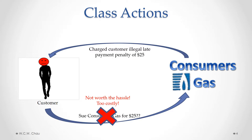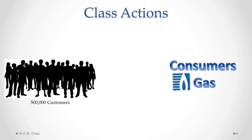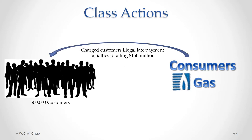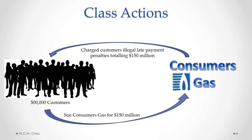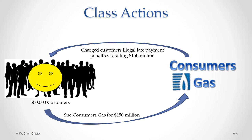With the ability to start a class action, instead of focusing on just one customer, we can look at all of the affected customers. In this case, there were 500,000 affected customers who, as a group, were charged illegal late penalties totaling $150 million. Those customers, as a group through a class action, can sue Consumers Gas for the whole $150 million. By being able to use a class action to recover the late payment penalties, the customers have a practical and useful way of recovering the penalties that they have paid.